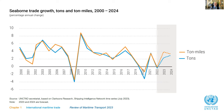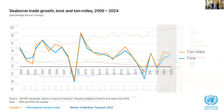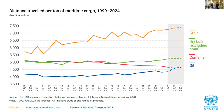Looking at growth rates, you clearly see the slump during the financial crisis and also the decline when COVID started. Generally, growth rates have been slowing over the decades. But year after year, ton-miles have grown more than tons — pointing back to the second long-term trend: the distance traveled for most commodities has increased.